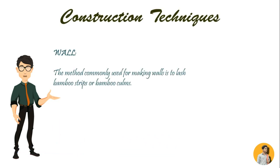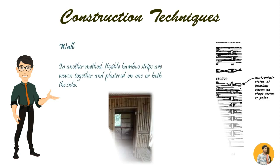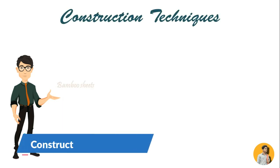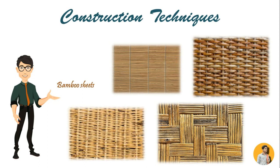Let's start with the walls. The method commonly used for making walls is to lash bamboo strips and bamboo canes horizontally at close intervals to both sides of hardwood or bamboo uprights or main posts, which are erected at all corners spaced at about 1.2 meters. The spaces between strips or columns are filled with mud. In another method, flexible bamboo strips are woven together and plastered on one or both sides. Bamboo sheets are split into thin slivers, the slivers are woven into a mat, mats are soaked in adhesive, allowed to drain and dry, then pressed together under high temperature and pressure to form roofing sheets. Sheets are trimmed and shaped and may then be painted.